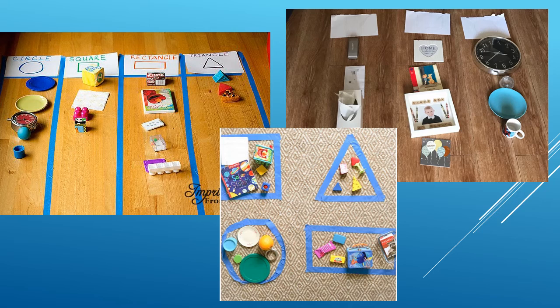These are some of the ways that other children have organized the shapes that they have found. You can see in the first one they've labeled it circle, square, rectangle, and triangle, and they've put them in long rows of all the different shapes they've found. Some have done it by making the shape and putting the objects inside.